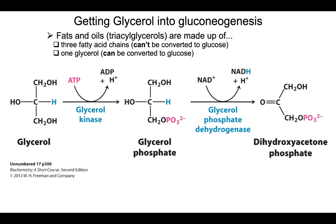Glycerol is one of the main components of fats. It's the three-carbon backbone with three hydroxyl groups to which three fatty acids are attached — that's your triacylglycerol, your fat. The fatty acids cannot be used to make glucose; however, the glycerol backbone can. Through glycerol kinase, we can convert it to glycerol phosphate, and then glycerol phosphate dehydrogenase converts it into dihydroxyacetone phosphate. Now we are in the middle of glycolysis and can either go down to make pyruvate or go up to make glucose.